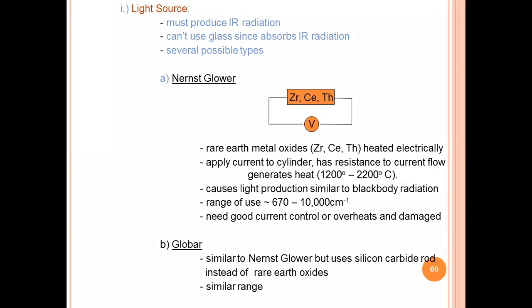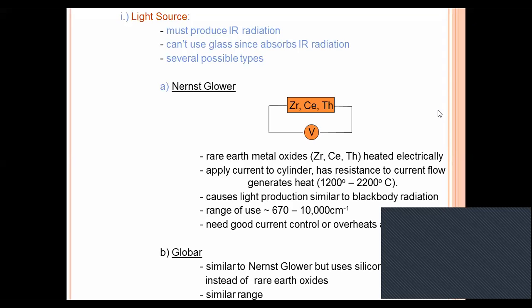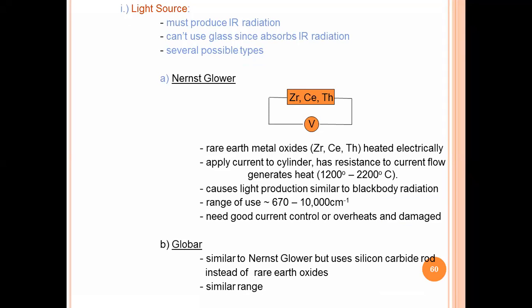Mostly the Nernst Glower is used as a light source. This Nernst Glower lamp is a rare earth metal oxide - a metal oxide of zirconium, cerium, or thorium. These are heated electrically. Apply current to cylinder, has resistance to current flow, generates heat up to 1200 to 2200 degrees Celsius.